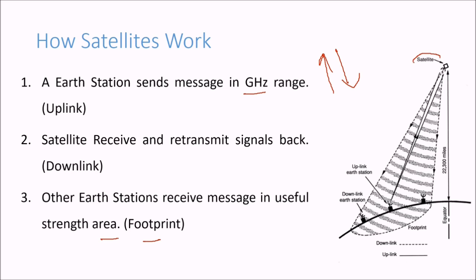As you can see here, this is the satellite. This is a part of earth's surface. We have an earth station which is uplinking something. This is a downlink earth station which is downlinking. This is one more earth station. This is the footprint of the satellite, so this satellite is capable of uplinking and downlinking around this many miles.